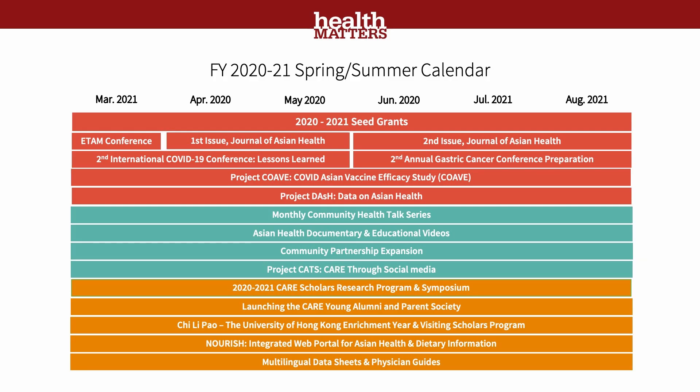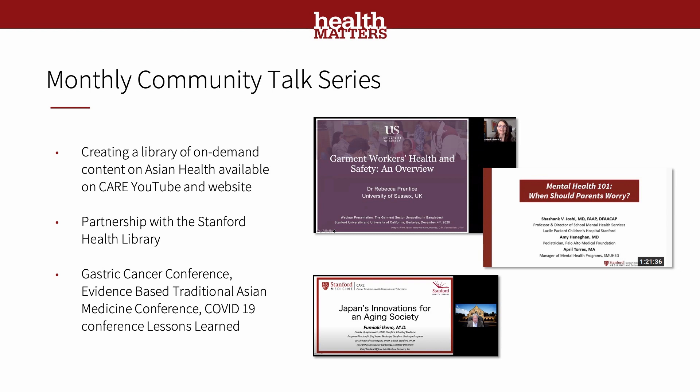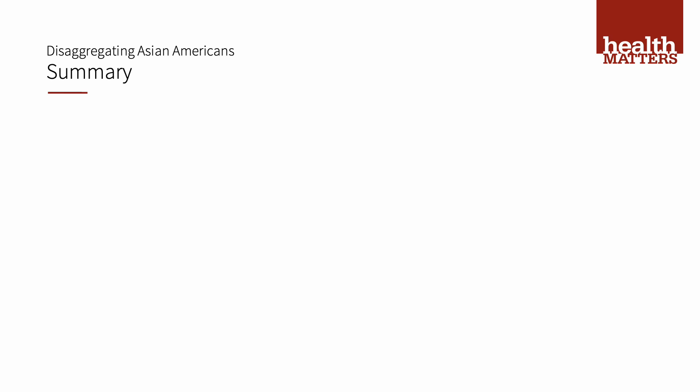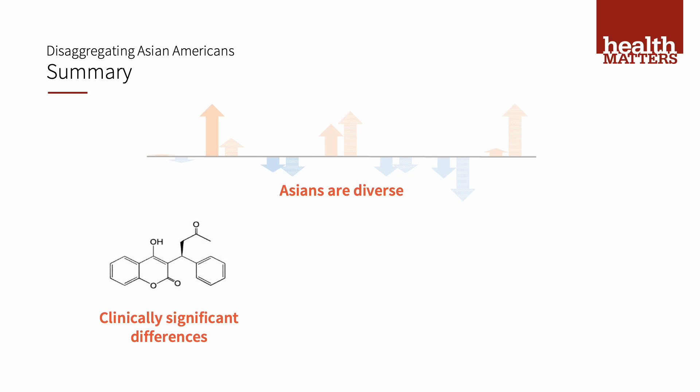Upcoming programs within the Center for Asian Health Research and Education focus on research, community interaction, and education. We have a monthly community health talk series in partnership with the Health Library, and we've held conferences on topics including gastric cancer, evidence-based traditional Asian medicine, and COVID-19, with a lessons-learned conference planned for 2021. In summary, Asians are diverse, there are clinically significant differences that physicians and patients need to be aware of, and better data collection is needed to provide precision health to everyone.